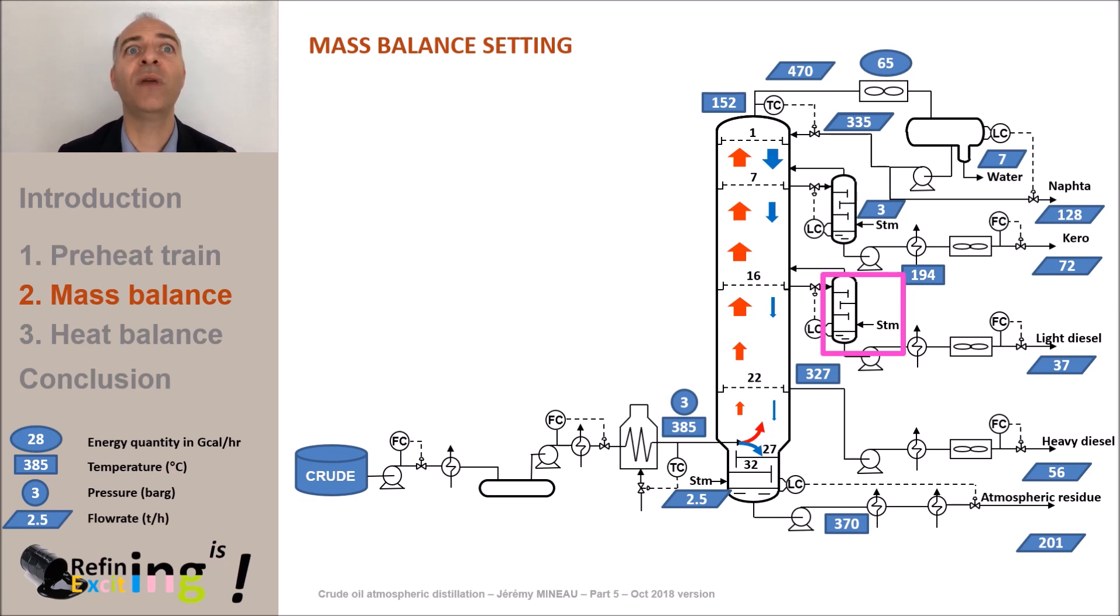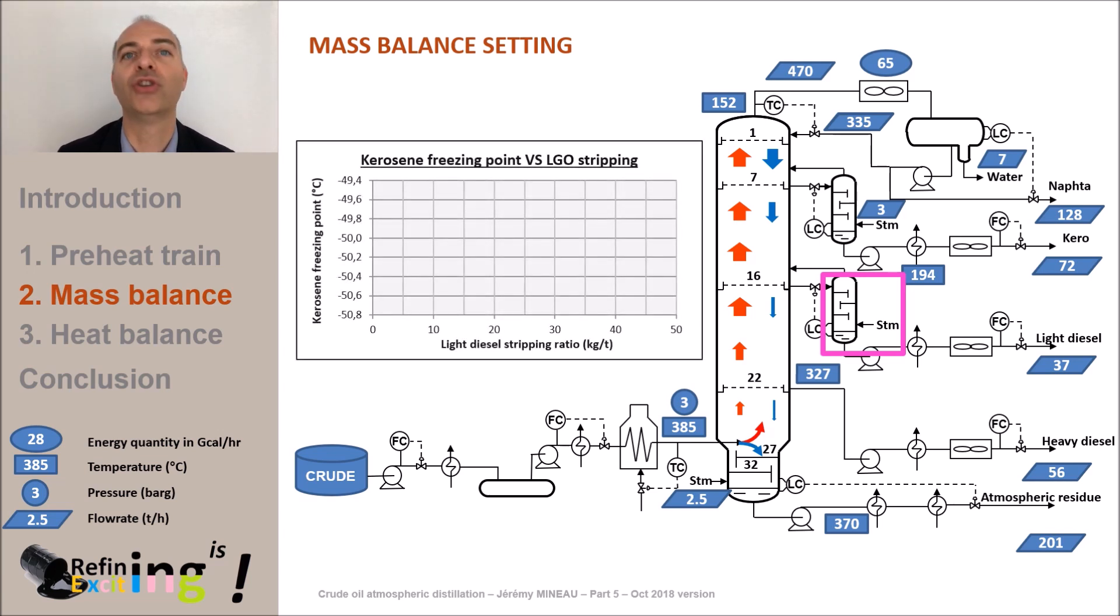Indeed, since we have removed parts of light diesel molecules, so the ones at low freezing point, we logically improved the freezing point of kerosene. With a stripping ratio of 27 kilograms of stripping steam per ton of light diesel, we see that we have an increase in about 1 degree C on the freezing point of the kerosene.